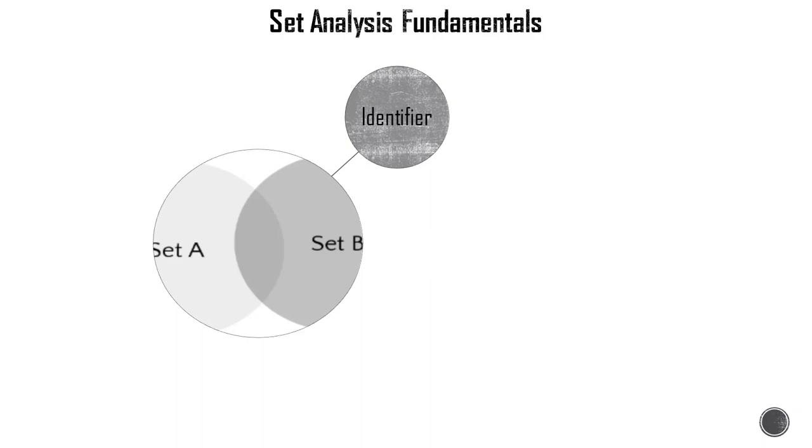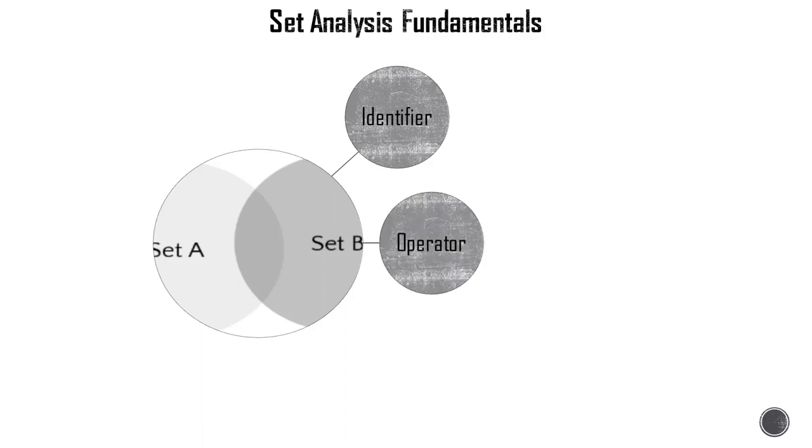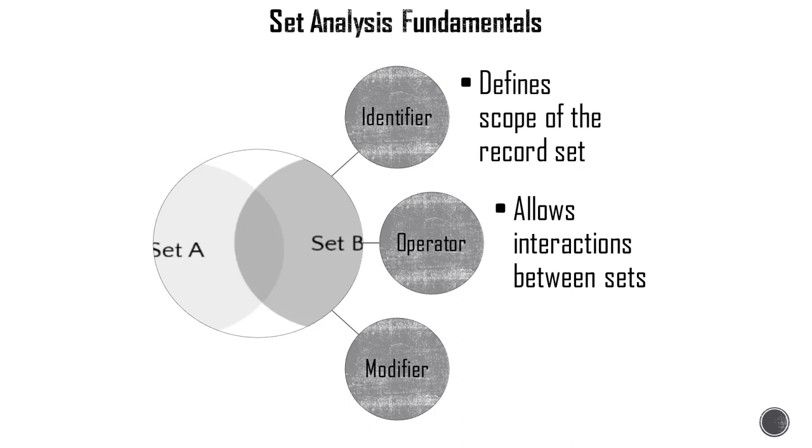So let's begin with the components. There are three components: first is the set identifier. If you think of a set as a subset of the data you have in your document, that subset has to have an identifier—essentially a boundary of the subset—and that's what the identifier is. Then there is an operator, so the operator allows you to interact between different sets. Commonly used set operators are plus, minus, intersection, divisor, etc. And of course there is a modifier, which is one of the most important components of set analysis syntax, and it's like a filter in your SQL statement.